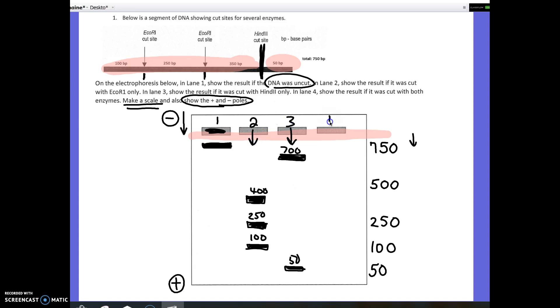And then finally, in lane four, I am putting what I would get if I cut the DNA with all of the enzymes. So, I have DNA in a tube. I mix it with both enzymes, my DNA would get chopped up in all of these spots, and I'd get four bands, a 100, a 250, a 350, and a 50. So, 50, 100, 250, 350, and I can put that in just to make it very clear.